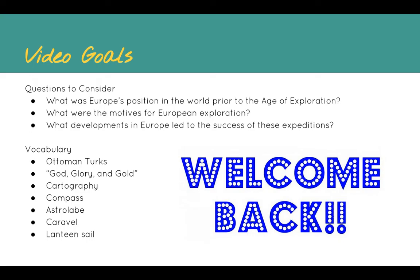We have a lot of vocabulary terms here: the Ottoman Turks, the phrase you'll hear a lot — God, glory, and gold — and then some technology that develops: cartography, the compass, the astrolabe, the caravel, and the lateen sail. So let's go ahead and get started.